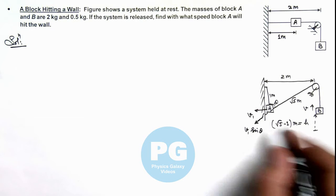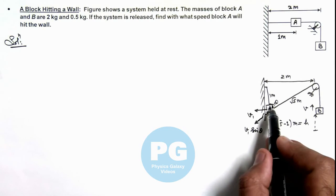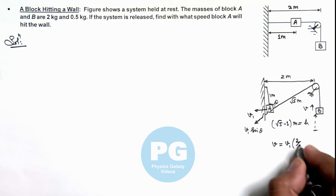So the constraint relation we can write: velocity of block B is equal to v1 multiplied by sine theta, and here the value of sine theta will be 2 by root 5.